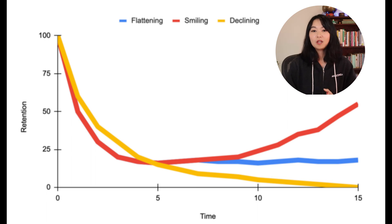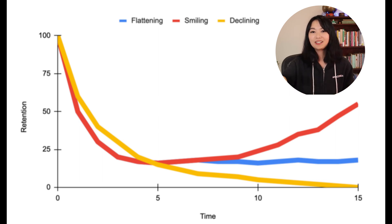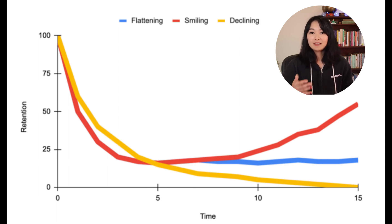Next, let's talk about the analytical frameworks of retention analysis. The first is the retention curve, which is widely used. A retention curve plots retention over time, with time on the x-axis and retention rate on the y-axis. Ideally, we would like to see a smiling curve when users come back more and more over time. A declining curve signifies danger, and a flattening curve signifies a healthy product. The goal is to shift the curve up and flatten or upturn the tail of the curve.